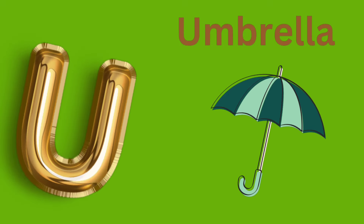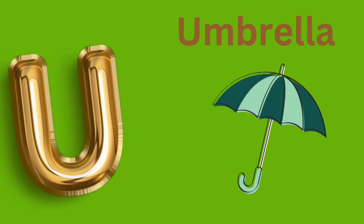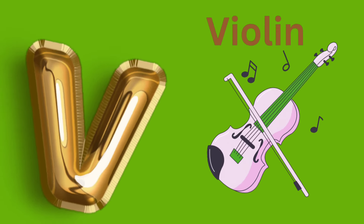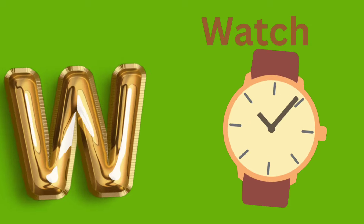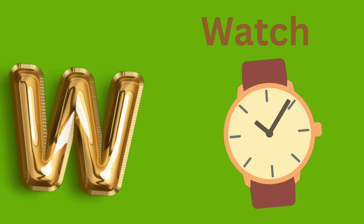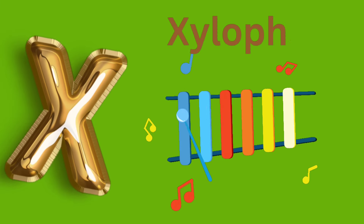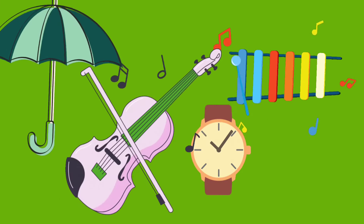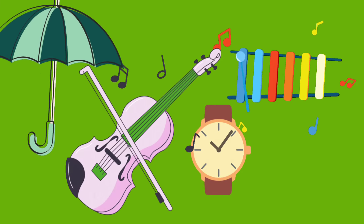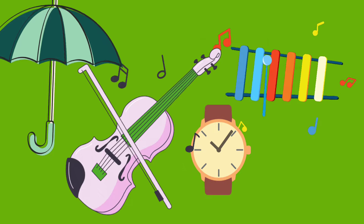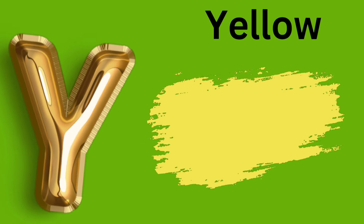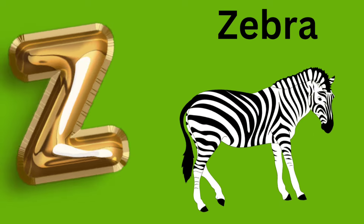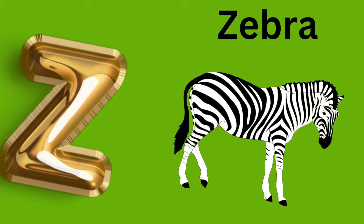U is for Umbrella. U, U, Umbrella. V is for Violin. V, V, Violin. W is for Watch. W, W, Watch. X is for Xylophone. Z, Z, Xylophone. Y is for Yellow. Ye, ye, Yellow. Z is for Zebra. Z, Z, Zebra.